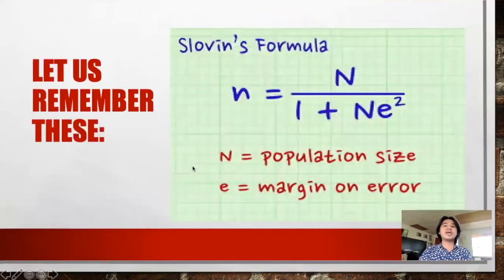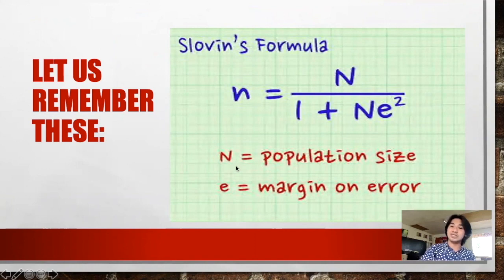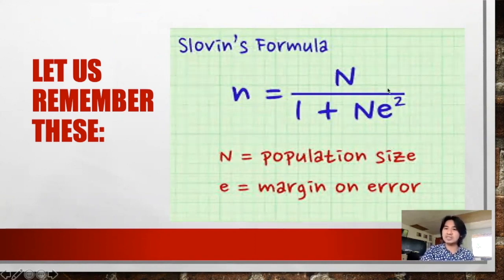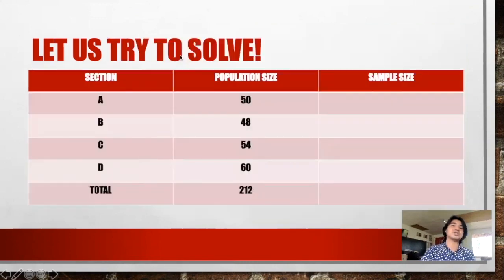Let's try to remember this: Sloven's formula is n (small letter n) is equal to N (capital letter N) over one plus N times e squared. Where N is the total population size and e is the margin of error.